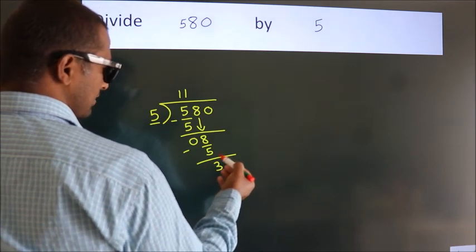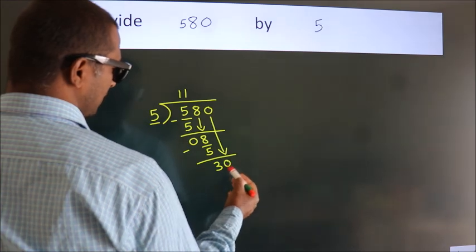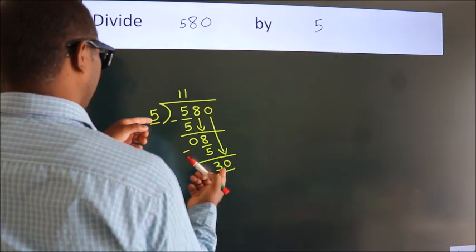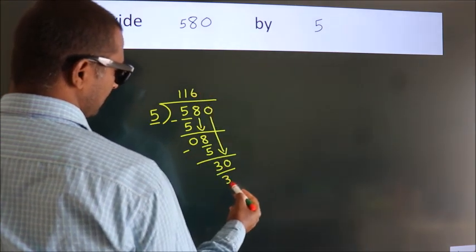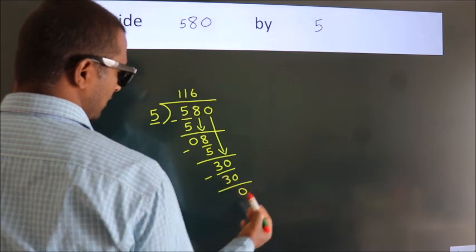After this, bring down the beside number, so 0 down, so 30. When do we get 30? In 5 table, 5, 6, 30. Now, we subtract, we get 0.